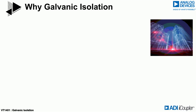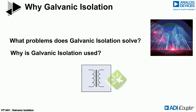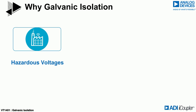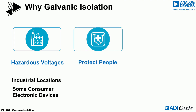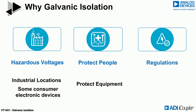So what problems are we trying to solve with galvanic isolation? Why would a system designer select such an isolator? Hazardous voltages exist in many industrial settings and some consumer electronics devices. People need to be kept safe from these hazardous voltages, and these voltages could also cause damage to sensitive or expensive electronic equipment. People and equipment need to be protected.